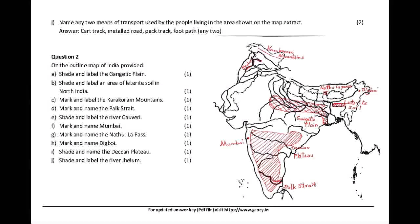D. Mark and name the Pak Strait. E. Shade and label the river Kaveri. F. Mark and name Mumbai. G. Mark and name the Nathu La Pass. H. Mark and name Digboi. I. Shade and name the Deccan Plateau. J. Shade and label the river Jhelum.